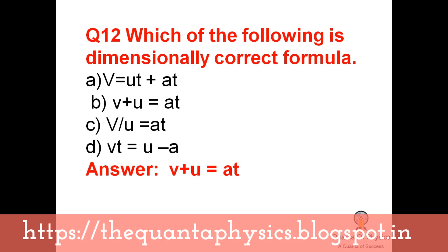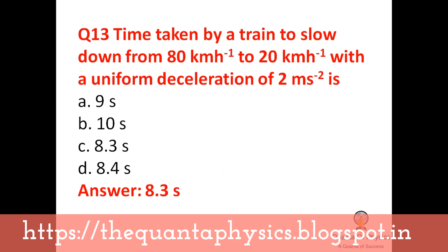Which of the following is a dimensionally correct formula? V plus U equals AT — here V is velocity, U is initial velocity, and AT has the dimension of velocity, so that is dimensionally correct. Time taken by a train to slow down from 80 km/h to 20 km/h with a uniform deceleration of 2 meters per second squared is 8.3 seconds, calculated using v = u + at, the first law of motion.